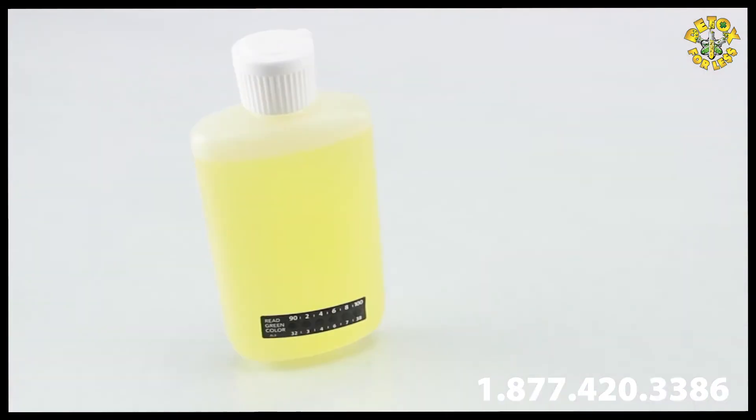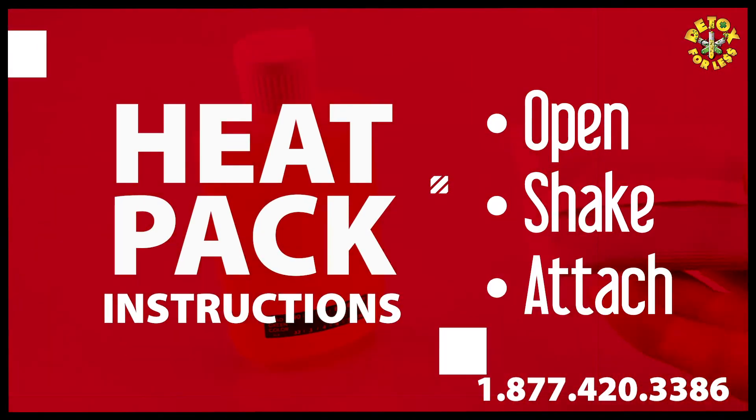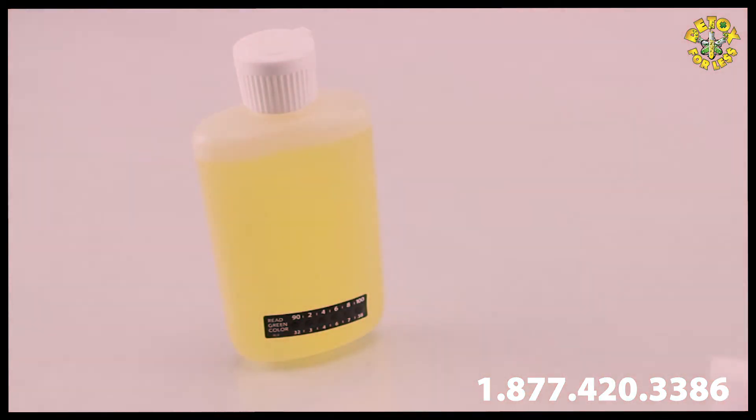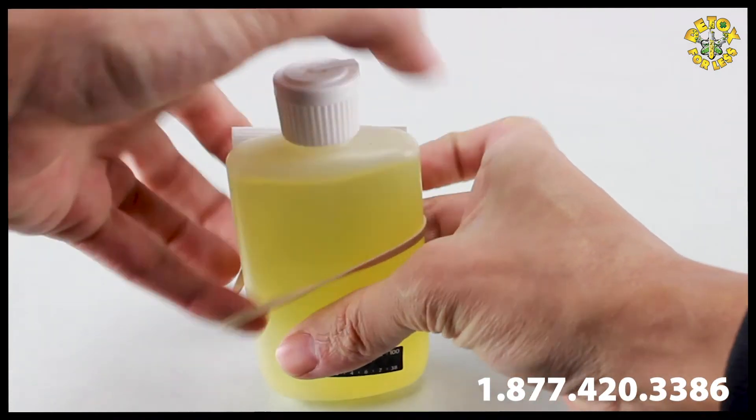If you need to keep your urine warmer for an extended time, simply open the heat pack that comes with your urine, shake it, and attach it to the bottle using the included rubber band. Make sure to attach the heat pack to the side opposite from the temperature strip, otherwise it could cause the strip to give you a false temperature reading.